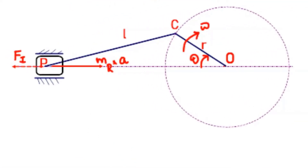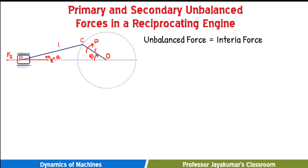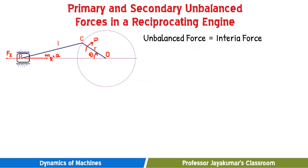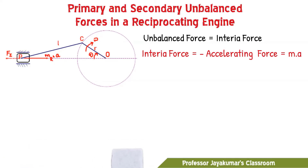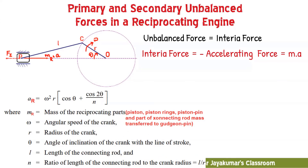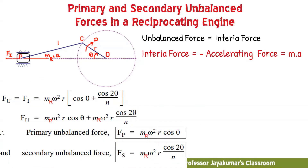Let us understand the concept of primary and secondary unbalanced forces in a reciprocating engine. Consider the reciprocating engine mechanism shown in the diagram, where OC is the crank, CP is the connecting rod, and P is the piston which reciprocates. The unbalanced force in an engine is the inertia force, equal to mass of the reciprocating parts multiplied by acceleration of the reciprocating parts. Let mr be the mass of the reciprocating parts and ar be the acceleration, found using the relation: ar = ω²r(cos θ + cos 2θ / n).